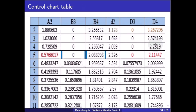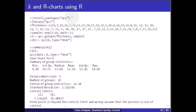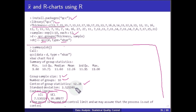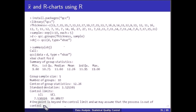For implementation, we install and call the qcc package in R. We enter the data for samples 1 to 10, each of size 5, group the data, and call qcc with type 'xbar'. The output shows LCL = 7.53022, UCL = 16.9897, group sample size = 5, number of groups = 10, center = 12.26, standard deviation = 3.525365. One point is beyond the control limit, indicating the process may be out of control.